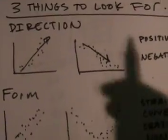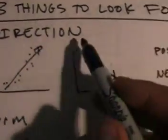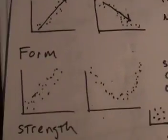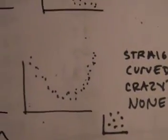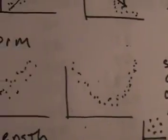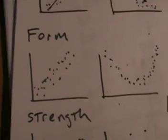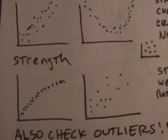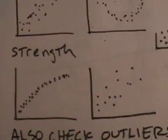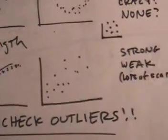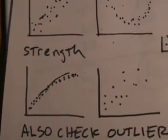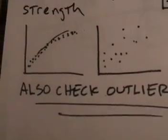Direction is just whether it's positive or negative. This example is positive, this one's negative. Just look at the flow. Form — is it straight, curvy, or crazy? What would none look like? That's none — nothing happening there, not much of an association. Make sure you say association. Correlation is actually a numerical value that determines the linearity of a relationship and how strong it is — we'll get to that later. Strength wants to know if it's strong or weak. It's strong when the pattern is very obvious; it's weak when there's a lot of scatter. The more scattered, the weaker; the tighter together, the stronger. Then we check for outliers. The same rule applies as before — if it looks like an outlier and smells like an outlier, then it's probably an outlier.